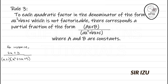Rule number 3 of our partial fractions says that for each quadratic factor on the denominator of the form ax² + bx + c which is not factorizable to linear factors, there corresponds a partial fraction of the form Ax + B all over ax² + bx + c.